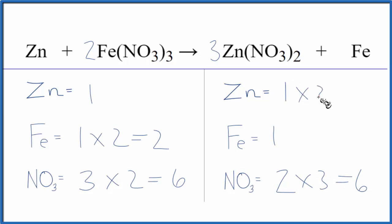One zinc times three, three zincs. But now it's pretty easy to balance. I need to have two iron atoms on this side. Put a coefficient of two. One times two. That equals two. And I need to have three zincs. So I'll put three here. One times three. That gives me three zinc atoms.